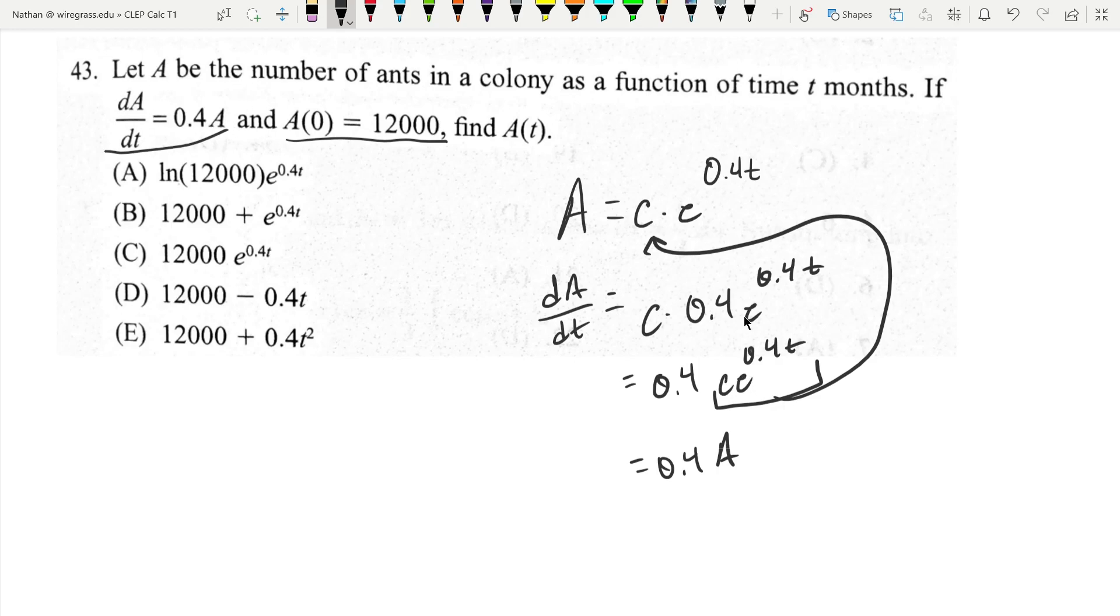Now, this constant here, this original c, this comes from this initial condition. So let's go ahead and find that. We know that A of zero, when t is zero, this whole thing becomes zero, e to zero is one, and we get just c. And A of zero is 12,000. That means c must equal 12,000. That's the only way this will work out with that initial condition.